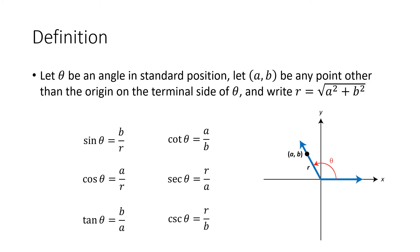Recall our definition of trig functions. We started talking about right triangles, then expanded our definition to find a trigonometric function of any angle. We find any point on the terminal side of our angle, call that point A comma B, compute R as the distance from the origin to that point, and then our six trigonometric functions are ratios involving A, B, and R.